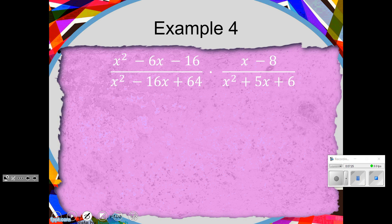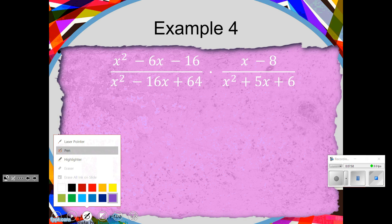Now we're going to get into multiplying. Do you have to have common denominators to multiply or divide? I hope you're saying no. When do you have to have common denominators? You have to have common denominators when you add and subtract, and we'll get to that in our next lesson. So when we multiply, you can just factor, cancel, smush — it's just going to be slightly bigger than what you were doing earlier today.